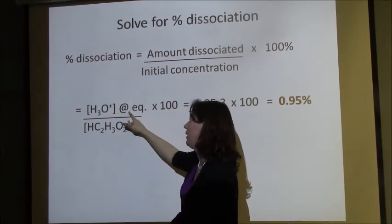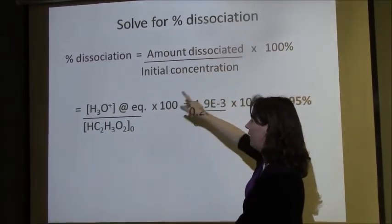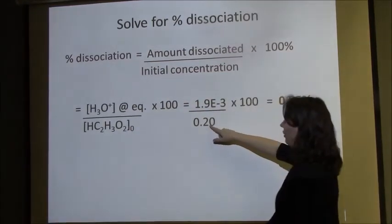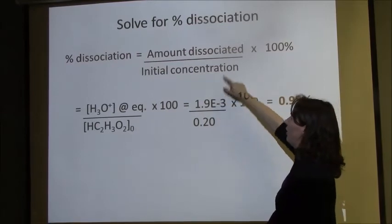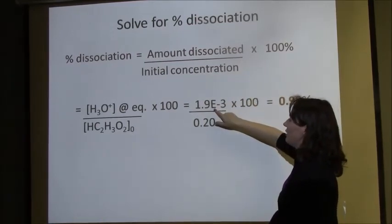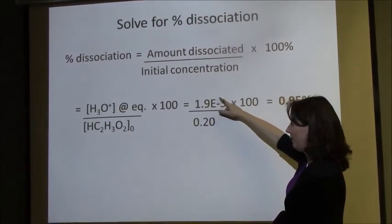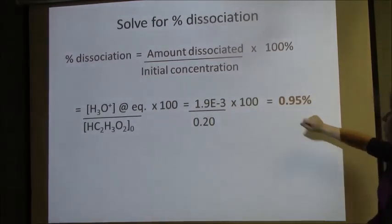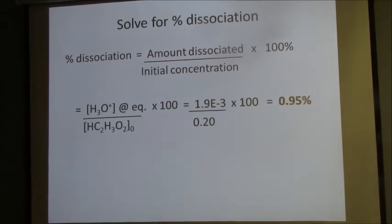You can use the concentration of H₃O⁺ at equilibrium to represent how much it dissociated, and the initial concentration as the denominator. My initial concentration was 0.2 and at equilibrium it only dissociated to 1.9 × 10⁻³. Divide those two and multiply by 100 — this gives only 0.95% dissociated.